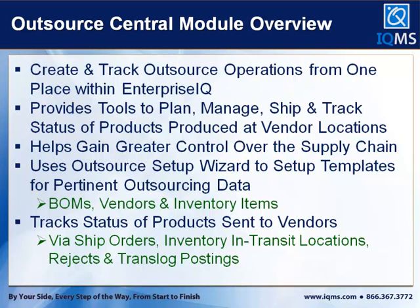We're using the Outsource Central setup wizard, and I'll go through it today. What you're doing is taking your vendors and creating ship-to locations, linking them to BOMs and inventory items. It will automatically create ship orders for the products you need to send, allowing you to track the status of products sent to your vendors. You'll see inventory in-transit locations — a different color in the locations in transaction screen — and it tells you what vendor it's at. You'll also be able to post rejects against a transaction at the vendor location, and those things will all get posted to the trans log.